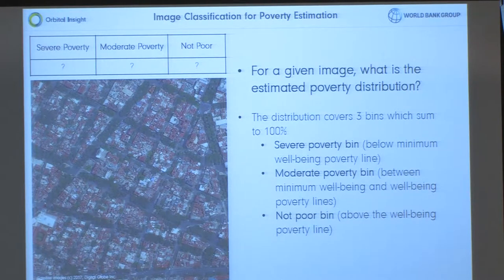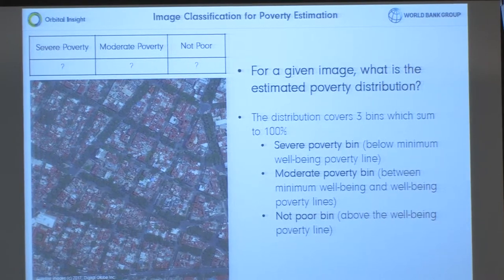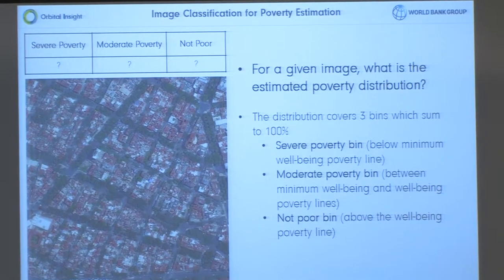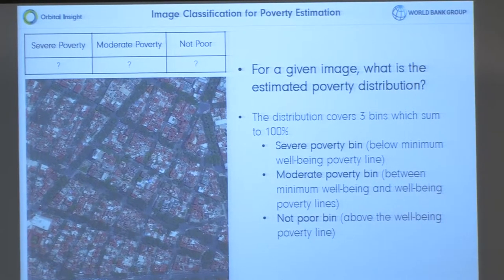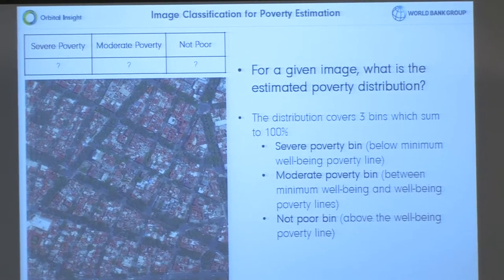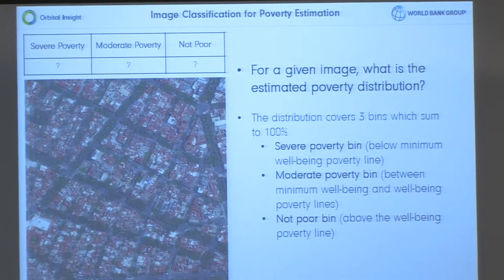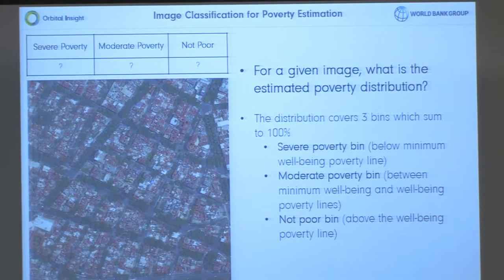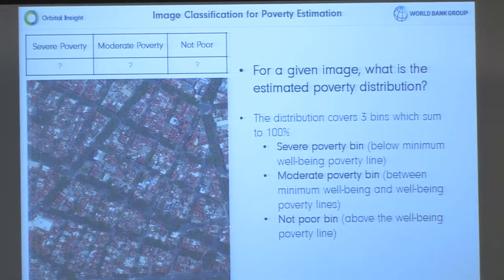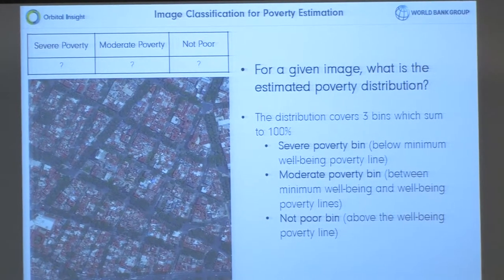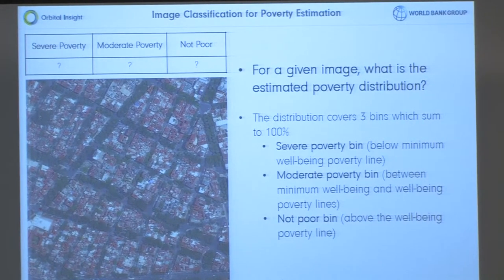What we do is we train a convolutional neural network — the kind of architecture in computer vision that has achieved state-of-the-art results in most computer vision tasks — to go directly from this image to predict this poverty distribution.